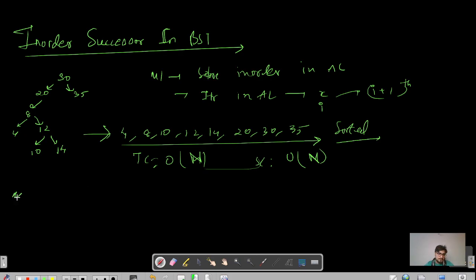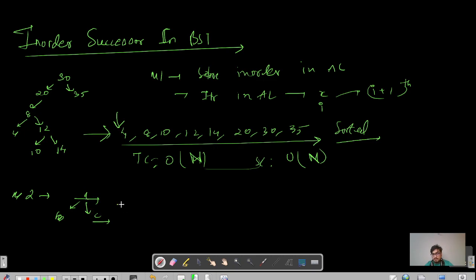In the second approach, in the first approach we were storing all elements, but since we are using a BST, we can use its property. In a BST, if we have nodes a, b, c, the left child should be less than the parent and the right child should be greater than the parent. Can we use this property to solve this question? Yes, we can. Let us find the in-order successor for node 12.